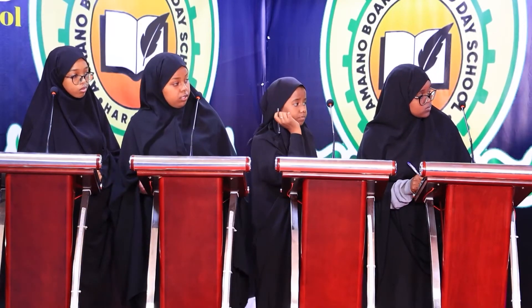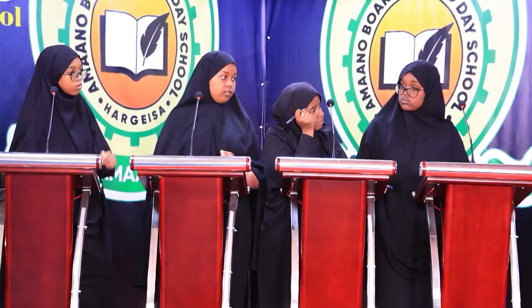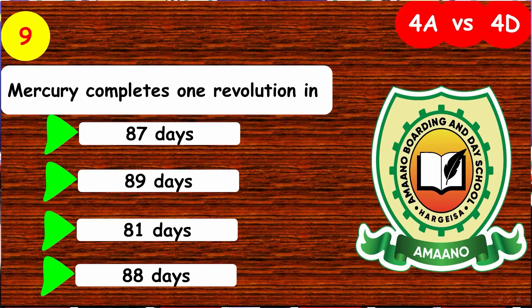This is an English question for the girls. Please give me blank books over there — this, these, that, or those? Those. That's correct. Number nine: Mercury completes one revolution in how many days? 87, 89, 81, or 88 days?